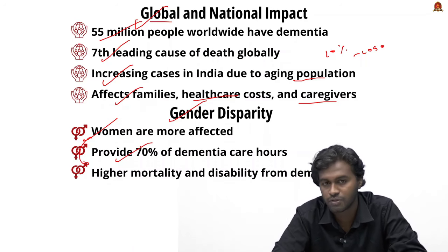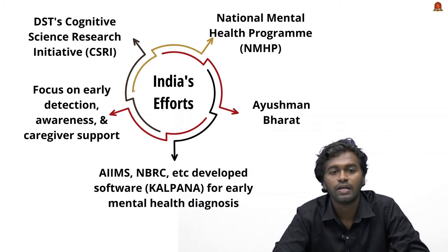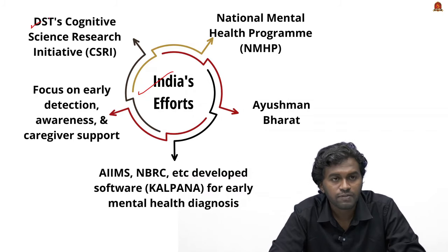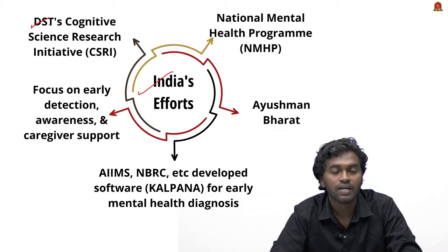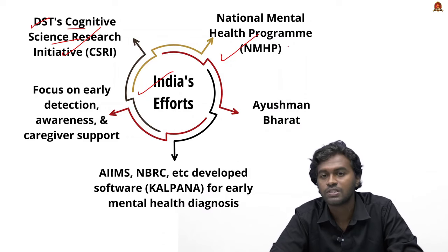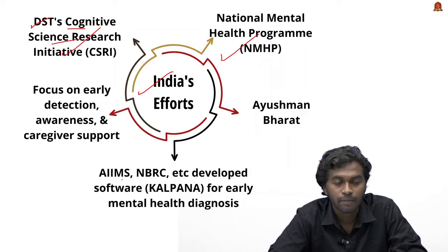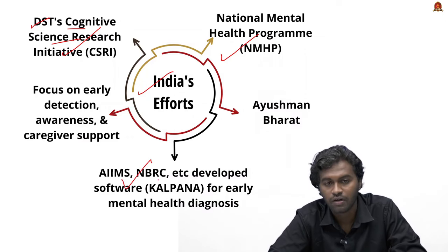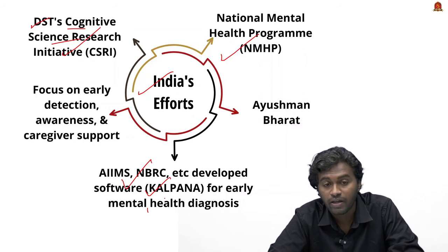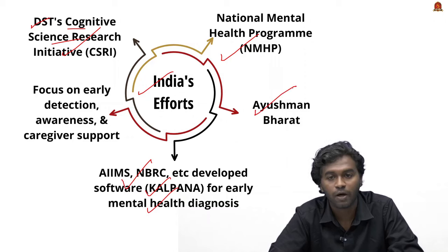India has taken several steps to address Alzheimer's and dementia. The Department of Science and Technology supports early detection, intervention, and research through the Cognitive Science Research Initiative. The National Mental Health Program includes dementia care. AIIMS and the National Brain Research Centre conduct research in this area and developed software called 'Kalpana' for early mental health diagnosis. A major step is 'Aishman Bharat,' which focuses on early detection, awareness, and caregiver support.